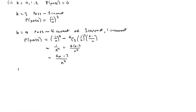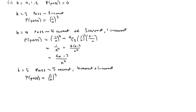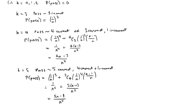For K equals five we could pass by either getting five correct, or having four correct and one incorrect — but if we had three correct and two incorrect we'd only get four marks, so that's not enough. So the probability of passing here is one over N to the five plus five choose four times one over N to the four times N minus one over N, giving five N minus four over N to the five.